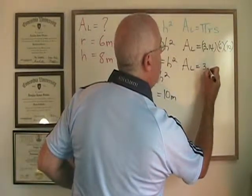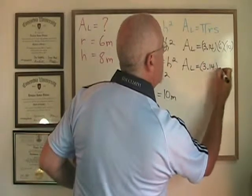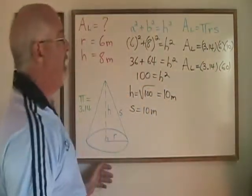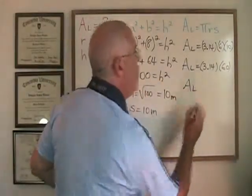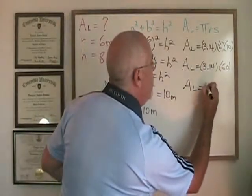We have 3.14 times 60. Our answer is 3.14 times 60 which is 188.4.